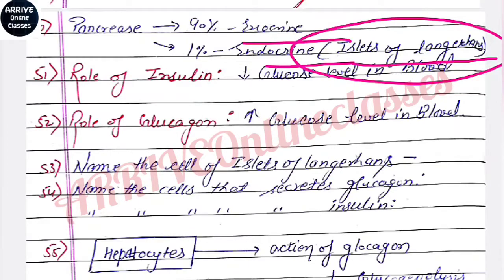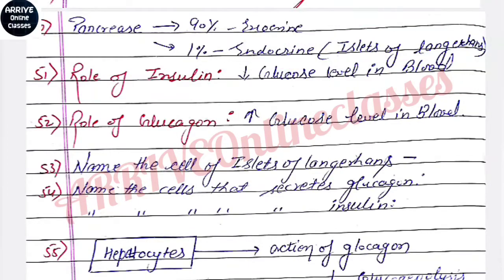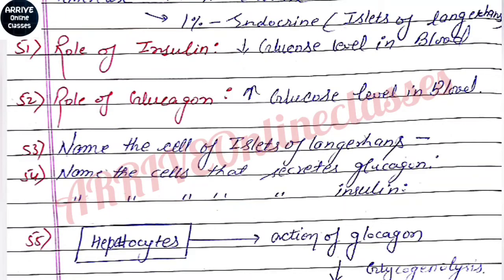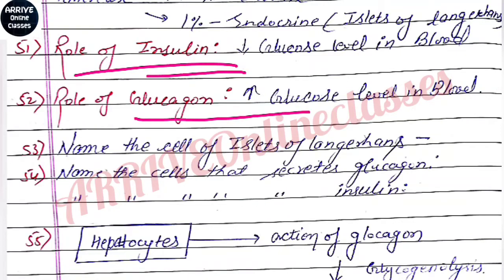If we talk about the role of insulin: when the blood sugar level is high in the body, insulin is secreted to lower it. When the blood sugar level is low, glucagon is secreted to raise it. Insulin and glucagon do opposite work.